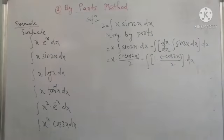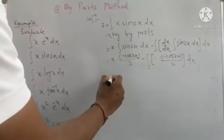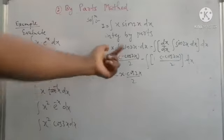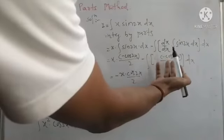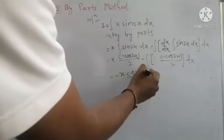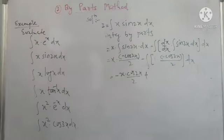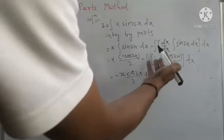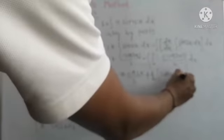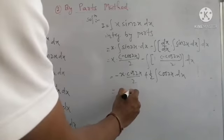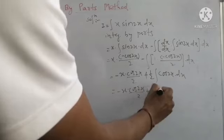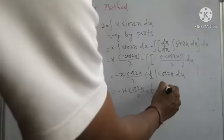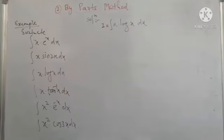Continuing simplification: in the first term we get −x·cos(2x)/2. The minus from the bracket comes outside the integration, changing the sign to plus, with the constant 1/2 taken outside. The integration is then only cos(2x) dx. Finally, the result is −x·cos(2x)/2 + (1/2)·sin(2x)/2 plus C.